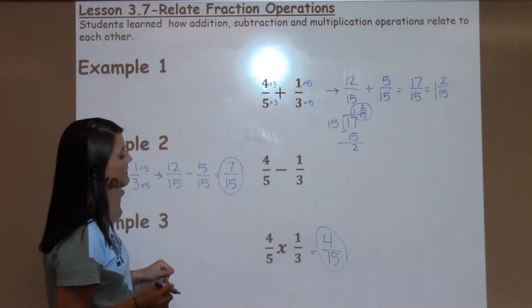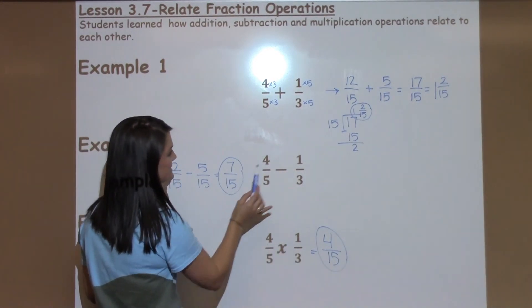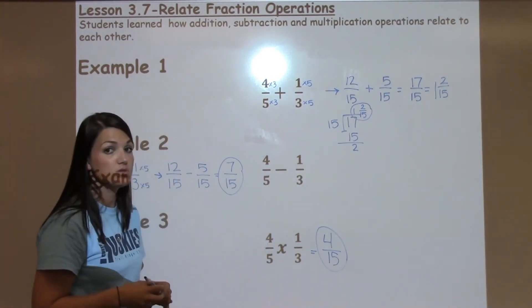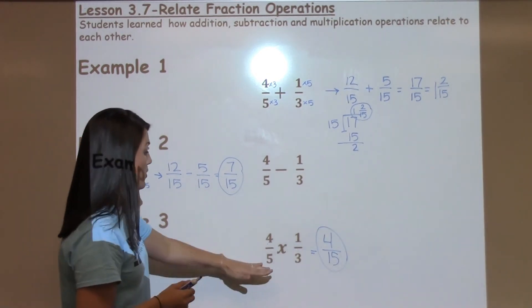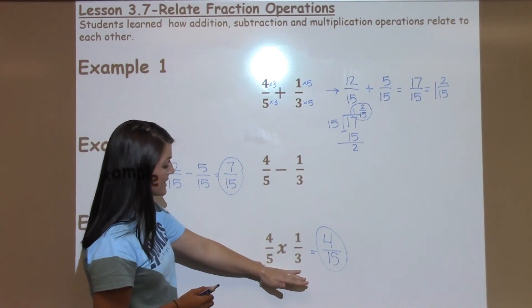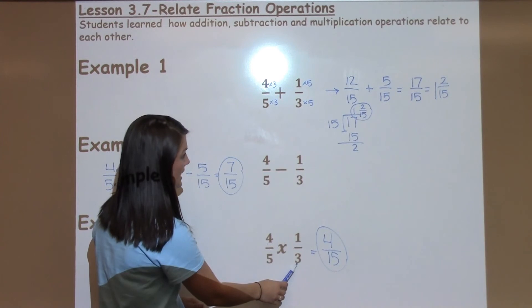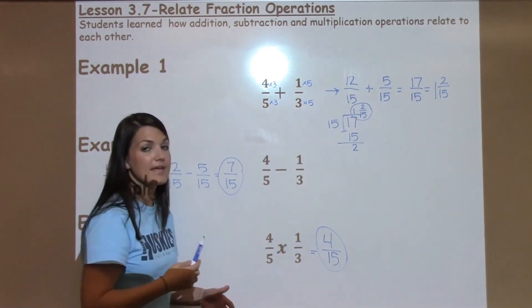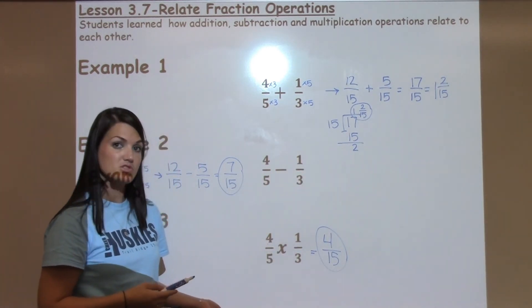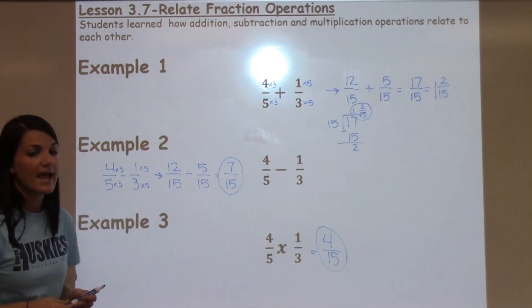Now, the thing that they have in common in all three problems is the denominator is 15. So that's something to point out to students. That when I'm looking at the denominators in this problem, I just times across. But they're the same here because I was timesing by the opposite denominator, which is 5 times 3. So that is one thing that they have in common.